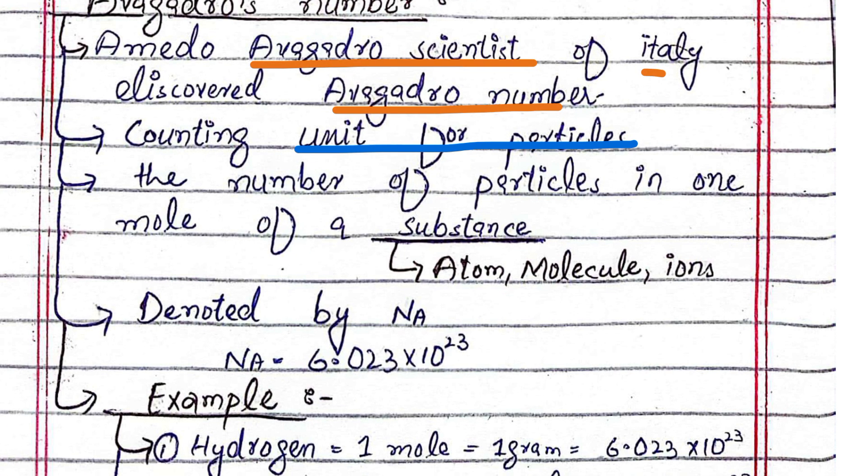The number of particles in one mole of a substance - whether atoms, molecules, or ions - one mole contains Avogadro number of particles.